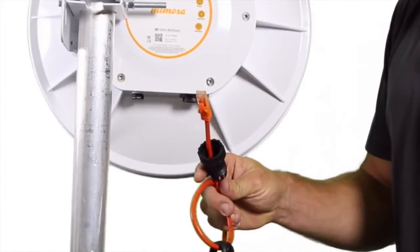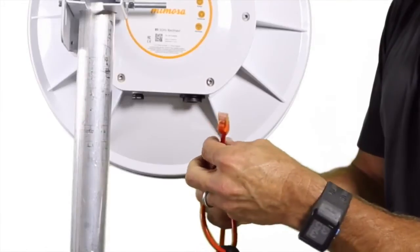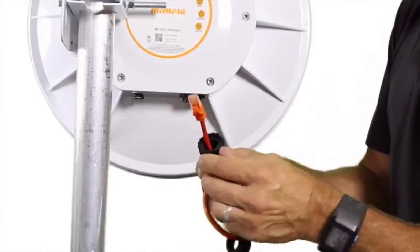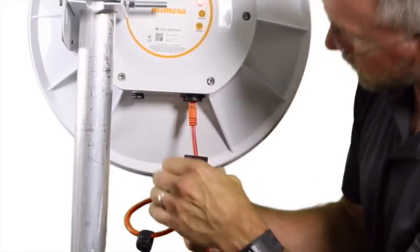There's also an O-ring that goes in the boot of the connector at this place. Make your connection to the base of the radio.